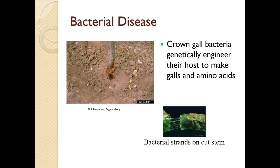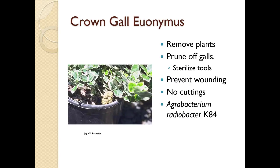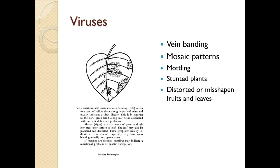Crown gall bacteria genetically engineer their host to produce galls and amino acids. If you cut and pull apart an infected stem, you'll see the characteristic strands of bacterial disease. Crown gall on euonymus is very common — you'll see it in many places. Management includes removing plants, possibly pruning off galls, sterilizing tools between cuts, preventing wounding, and not taking cuttings. Agrobacterium radiobacter K84 is a biological control for crown gall that may help with smaller infestations.